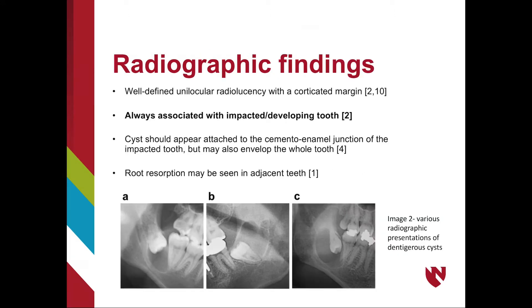Radiographically, a dentigerous cyst appears as a well-defined unilocular radiolucency with a corticated margin. There will always be an impacted or developing tooth associated with the radiolucency. The cyst will appear to be attached to the CEJ of the impacted tooth but may envelop the whole tooth. Dentigerous cysts may have an effect on surrounding structures, including root resorption in adjacent teeth. In image A, the cyst is attaching to the CEJ of tooth number 32, and there is resorption of the adjacent tooth visible in image C.